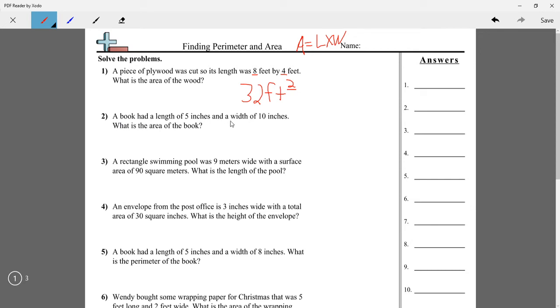A book had a length of 5 inches and a width of 10 inches. What is the area of the book? Once again, we're just multiplying length times width. So 5 times 10 equals 50, so it is 50 inches squared.